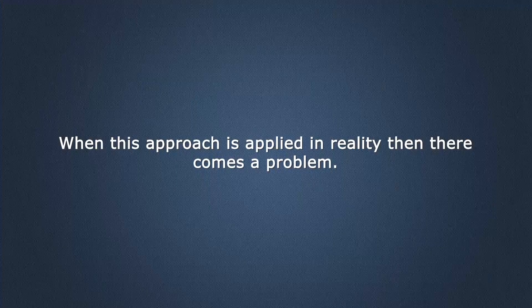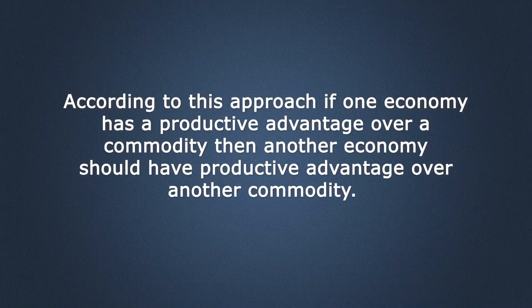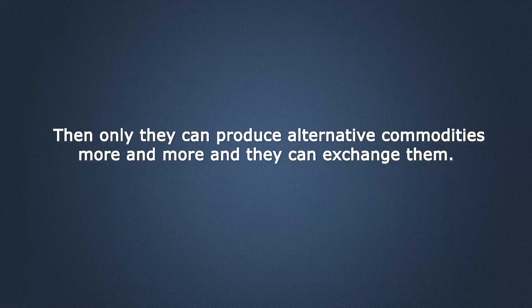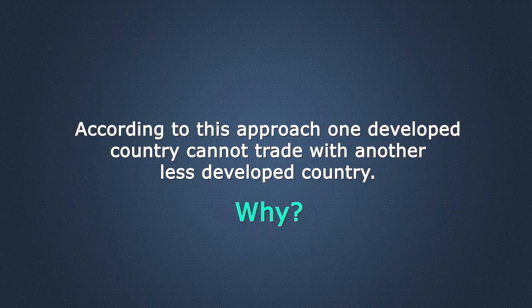Now, when this approach is applied in reality, there comes a problem. According to this approach, if one economy has productive advantage over a commodity, then another economy should have productive advantage over another commodity. Then only they can produce alternative commodities and exchange them. So in that case, there is an assumption that both countries should be equally productive or equally strong — both developed countries or both underdeveloped countries can exchange. According to this approach, one developed country cannot trade with a less developed country.